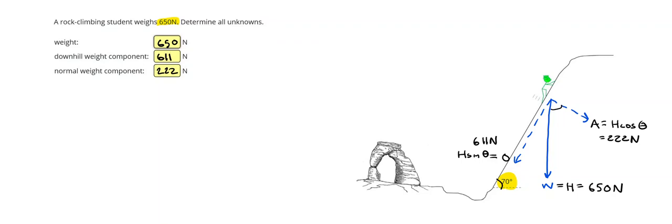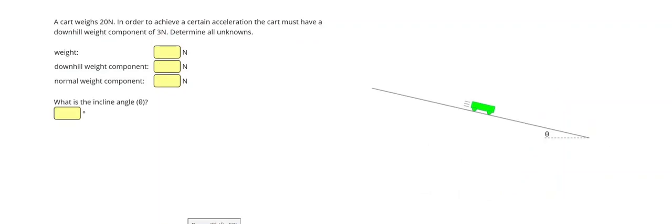Alright, so the difference in this one, we had such a steep angle that this downhill weight component was more. Remember, the weight was closer to pointing, this one was closer to being 90 degrees. And so it was greater than 45, so we expect a larger downhill weight component than normal weight component. Let's take a look at one more problem where we kind of have a different given.